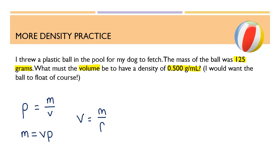So our mass is 125 grams, and our density is 0.500 grams per milliliter. So our volume must equal 250 milliliters. Or because we're measuring the volume of a solid, this would equal 250 cubic centimeters.